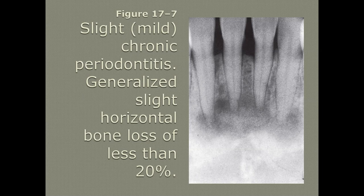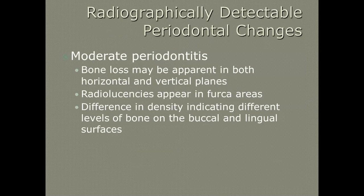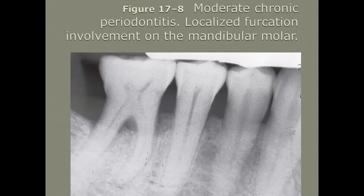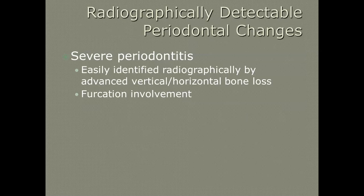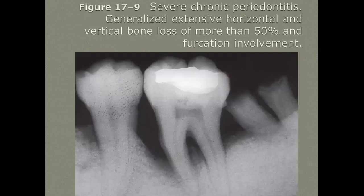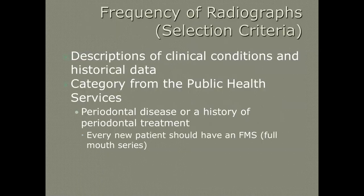Moderate periodontitis is just what it means — it's moderate. There's a difference in density indicating different levels of bone on the buccal and lingual, and there may be radiolucencies in the furcation area. This is a true moderate — they still have about 50% of the root covered with bone with the furcation visible. Severe or advanced — no brainer — more than 50% of the bone is lost.